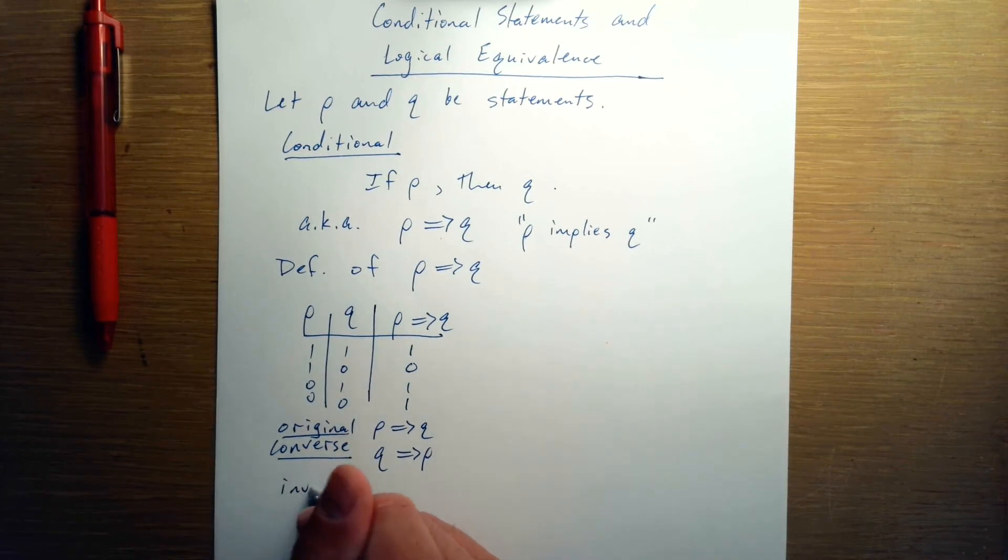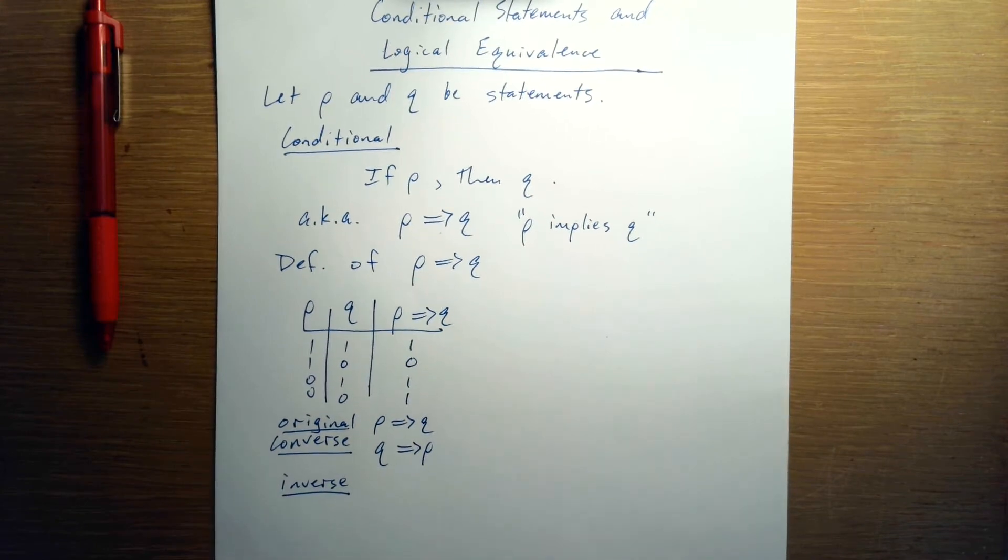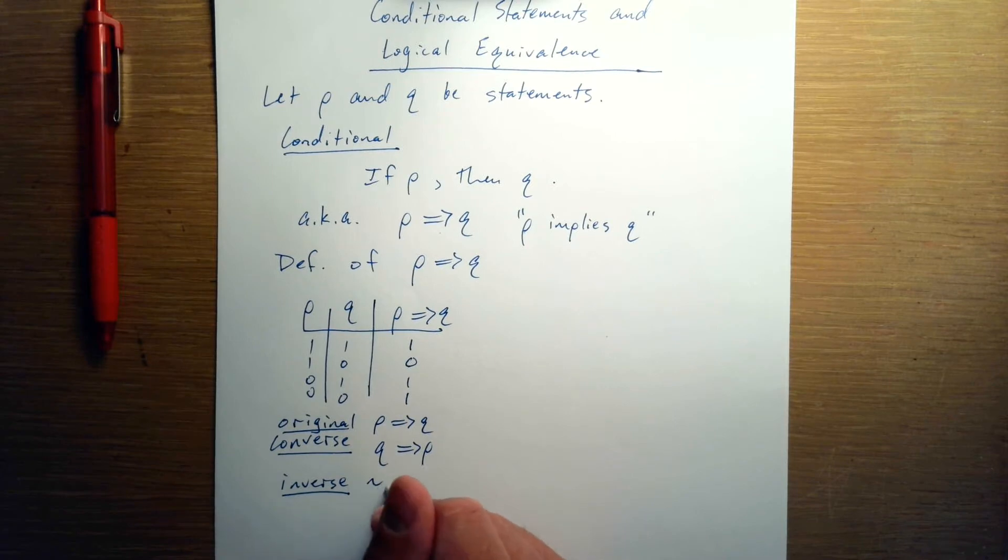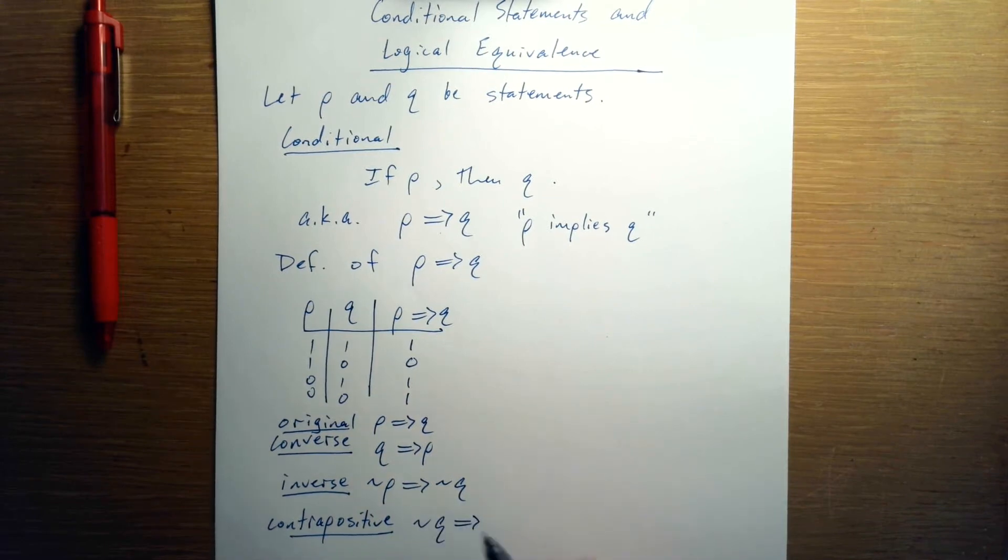The inverse, which is not often used, so we won't take too deep of a look at this, is not P implies not Q. And this one has a fancy name called the contrapositive, is not Q implies not P.